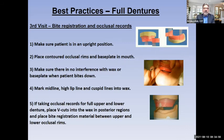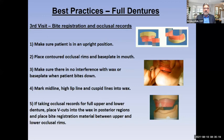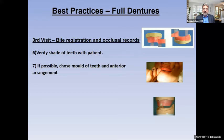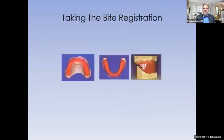On the third visit, you're taking occlusal records. Make sure the patient is in an upright position. Place the occlusal rim in the patient's mouth and ensure there's no interference when the patient bites down. Mark the midline, high lip line, and cuspid line. If taking records for both a full upper and full lower denture, place V-cuts in the wax in the posterior regions, then place bite registration material between the upper and lower occlusal rims. Also have the patient go through different phonetics — go through the alphabet — to verify the length of the occlusal rim is correct.